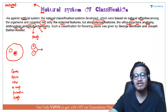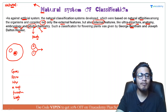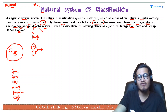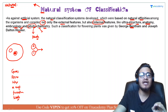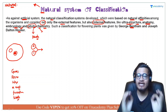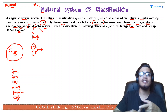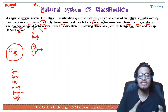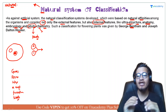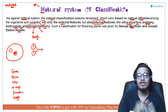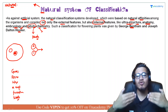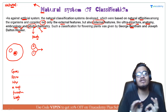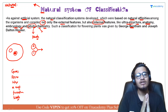This particular system was given by Bentham and Hooker. Pehla jo artificial system tha, that was given by Carolus Linnaeus, and this natural system of classification was given by Bentham and Hooker — jisme morphological characters to liye hi gaye, saath mein internal characters jaise ki ultra structure, embryonic development aur phytochemistry bhi dekhe gaye. So this particular system of classification was more developed and more acceptable as compared to artificial system, kyunki artificial system mein sirf morphology se kaam nahi chalta.